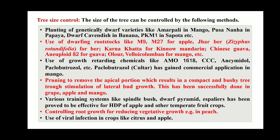Third, use of growth retardant chemicals like AMO-1618, CCC (Cycocel), and Paclobutrazol — these are examples of chemicals for retarding the growth of the plant. Fourth, in mango particularly, pruning to remove the apical portion results in a compact and bushy tree through stimulation of lateral bud growth. This has been successfully done in grape, apple, and mango.